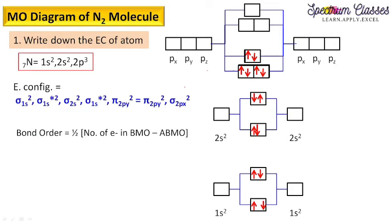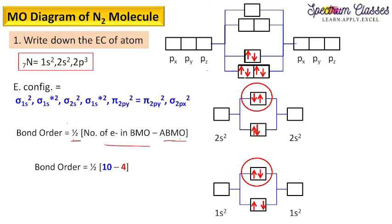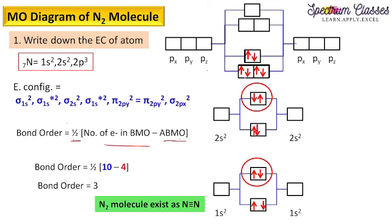Now for the bond order calculation: bond order = ½ × (number of electrons in bonding molecular orbitals minus number of electrons in anti-bonding molecular orbitals). We have 10 electrons in bonding molecular orbitals and 4 electrons in anti-bonding molecular orbitals, giving a bond order of 3. This means nitrogen in the nitrogen molecule exists as N≡N — a triple bond.